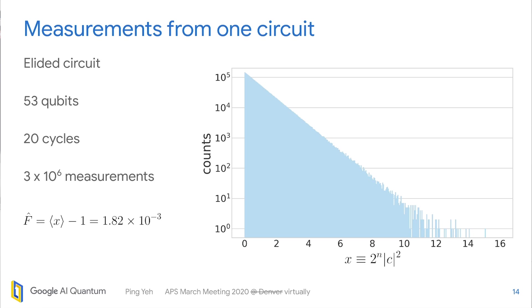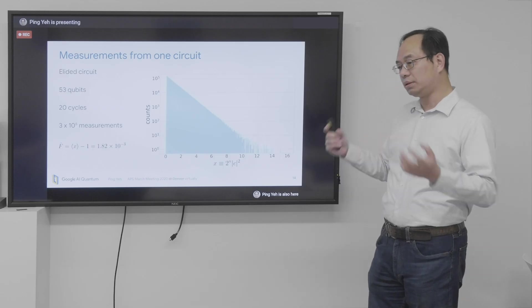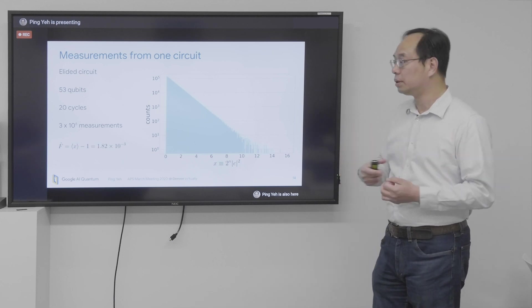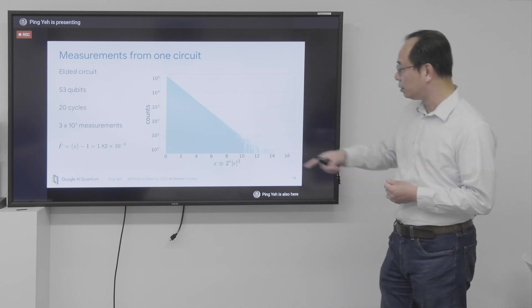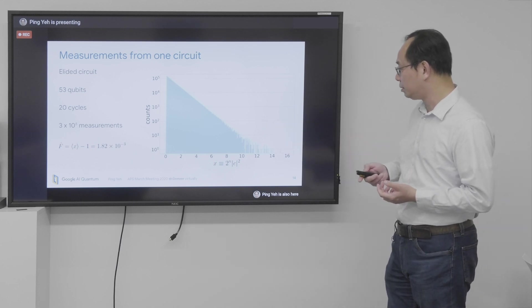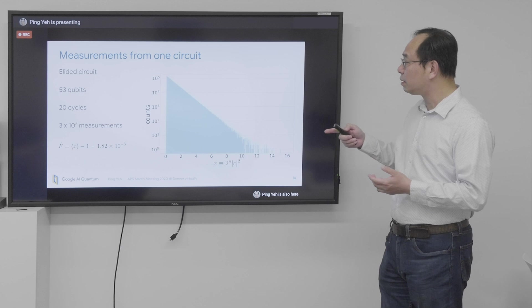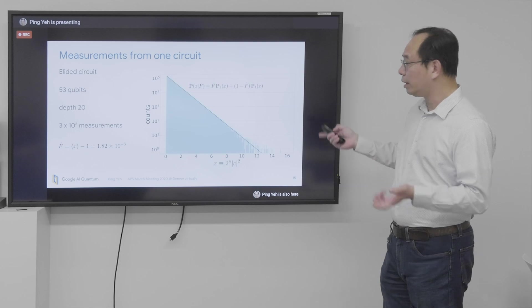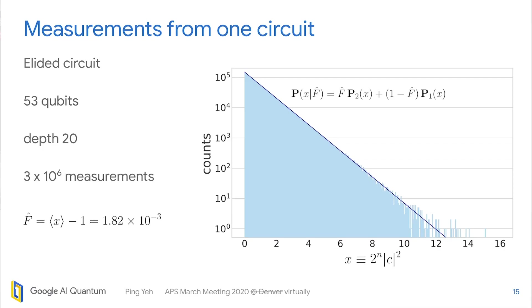And then now we want to see how this x distribution looks like. So we took data from Elitis circuit with 53 qubits, 20 cycles, and 3 million measurements. Here, Elitis circuit means we removed 22 qubit gates out of this circuit to make the computation in classical computer as possible. And we estimate the fidelity to be that value, 0.18%. The next is we want to see whether that distribution looks like what we predicted with the theory. So we overlay that. Just by eyeballing it, it looks similar.